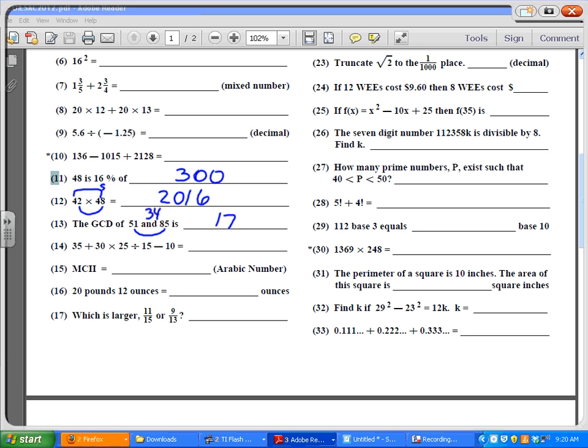Number 14, you have 35 plus 30 times 25 divided by 15 minus 10. I would look at these three numbers because the order of operations says we're going to multiply and divide first before we can add or subtract. So I'm going to have 30 divided by 15, that's 2 times 25, that's 50. So I have 50 minus 10, that's 40. 40 plus 35, that's 75.